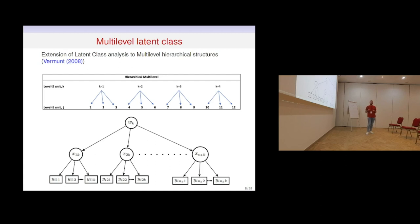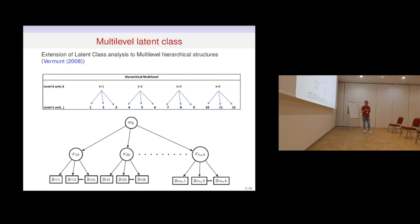We consider the extension of latent class analysis to multilevel hierarchical structures, already considered in the literature. We build a mixture model for each level and obtain clustering not only for the lower level but also for higher-level units. We observe that the data structure requires modifying the E-step of the EM algorithm to account for membership variables at various levels. A typical example is to consider students as level-1 units belonging to the same school as the higher-level units.